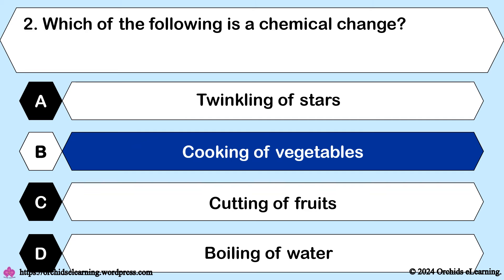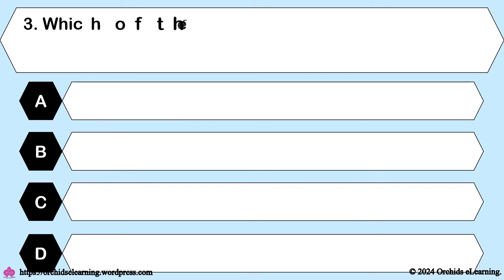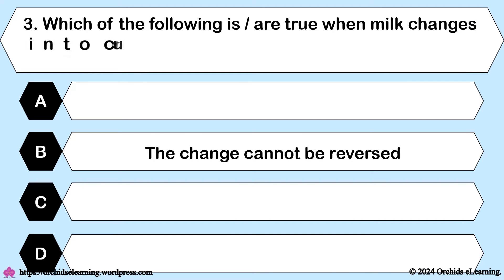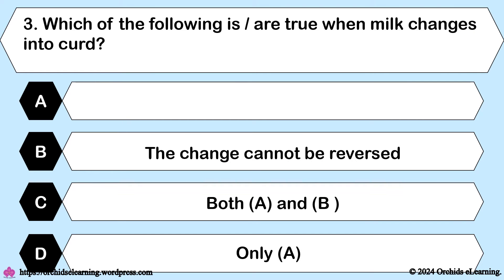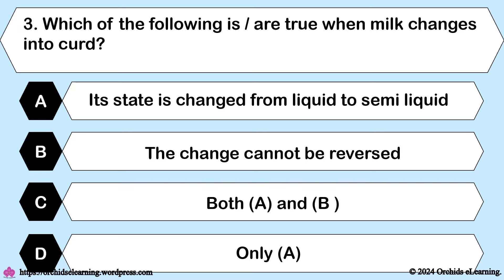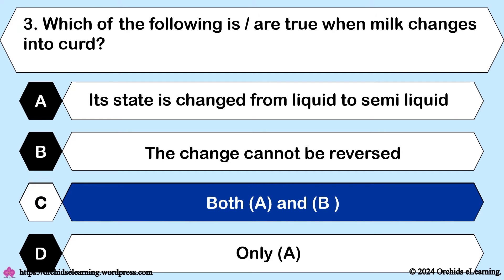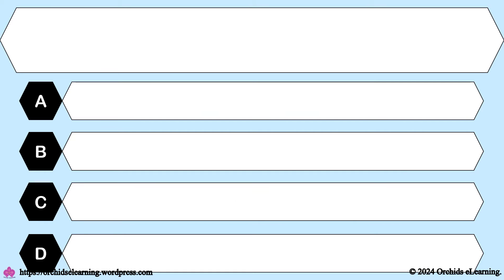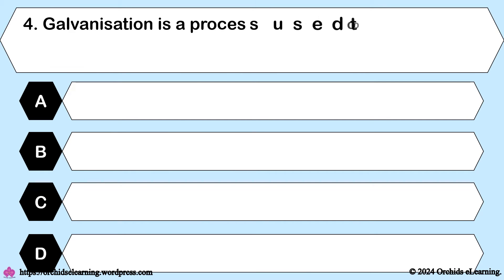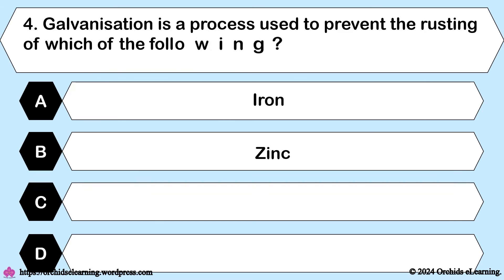Answer: B — Cooking of vegetables. Which of the following is/are true when milk changes into curd? Answer: C — Both A and B. Galvanization is a process used to prevent the rusting of which of the following?